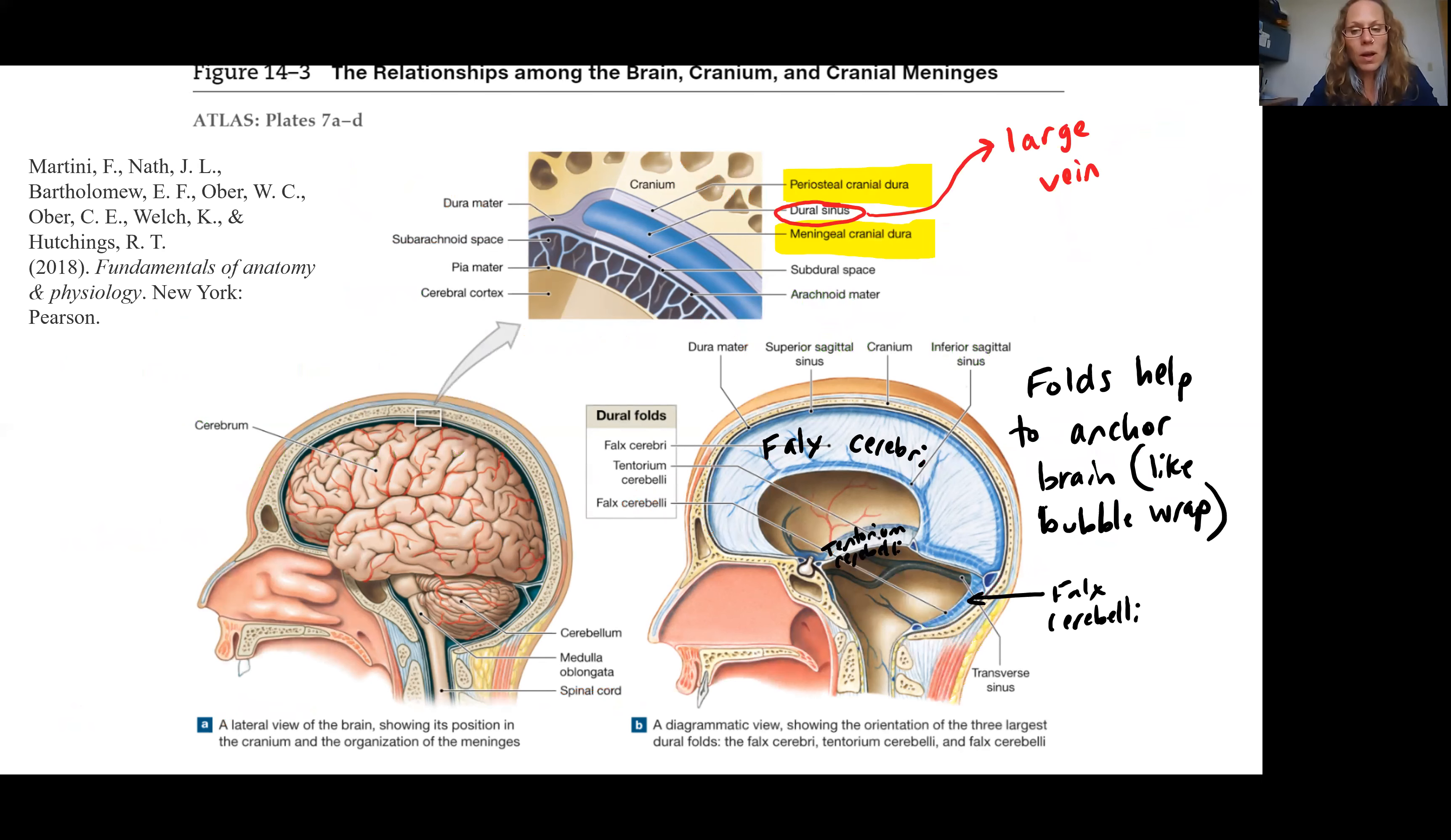Notice the position of our three folds. Extending down in between the left and right hemispheres, extending down into that longitudinal fissure, we have the falx cerebri. Then we have in between the cerebrum and cerebellum, in that space we have the tentorium cerebelli.